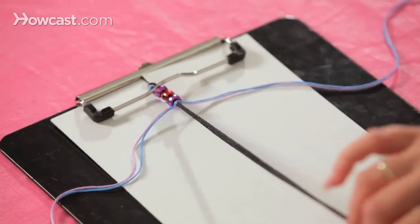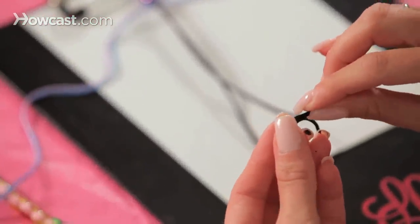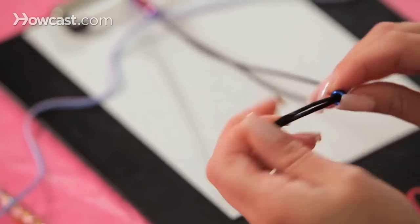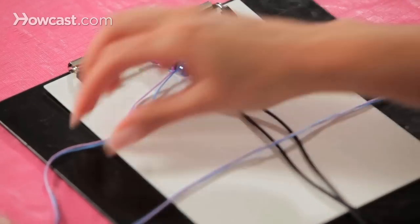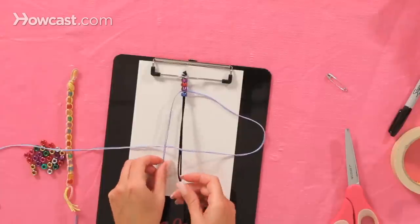And you just keep doing that until the bracelet fits your wrist. Both cords in, pull to the top, and now you're on the right side. Cross, straight down, and go diagonally through.